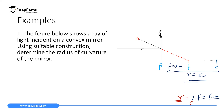To summarize: a ray parallel to the principal axis for a convex mirror appears to have emerged from F. Extend the reflected ray until it touches the principal axis — that gives the focal point. Measure that distance to the pole for the focal length. Double it to get the radius of curvature, and you can also indicate the position of the center of curvature on the diagram.